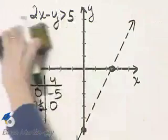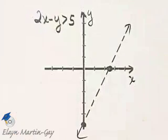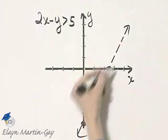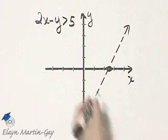Now I need to shade one side of the boundary line or the other. How do we decide what side to shade? We find a test point not on the boundary line, and we check the test point.